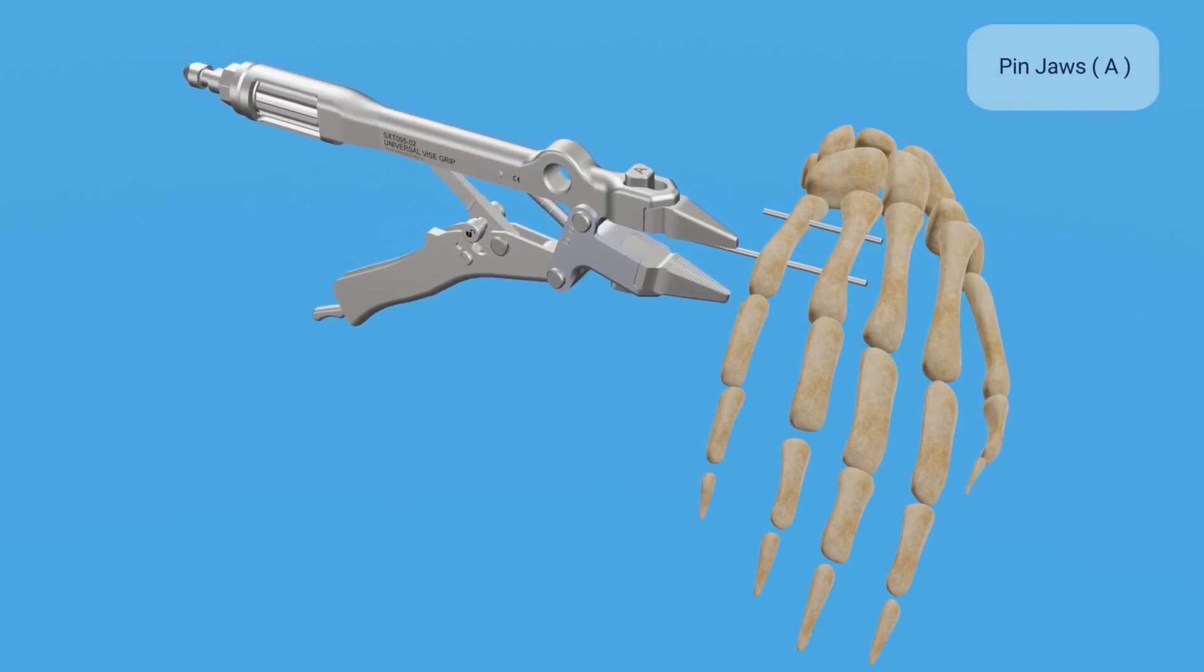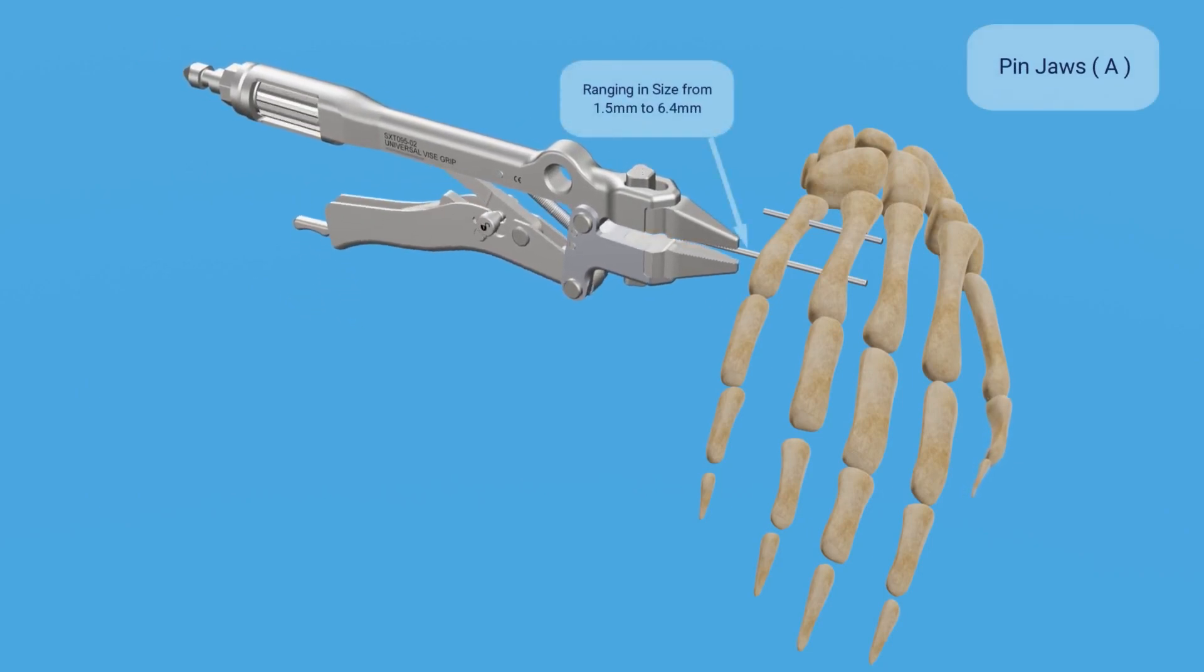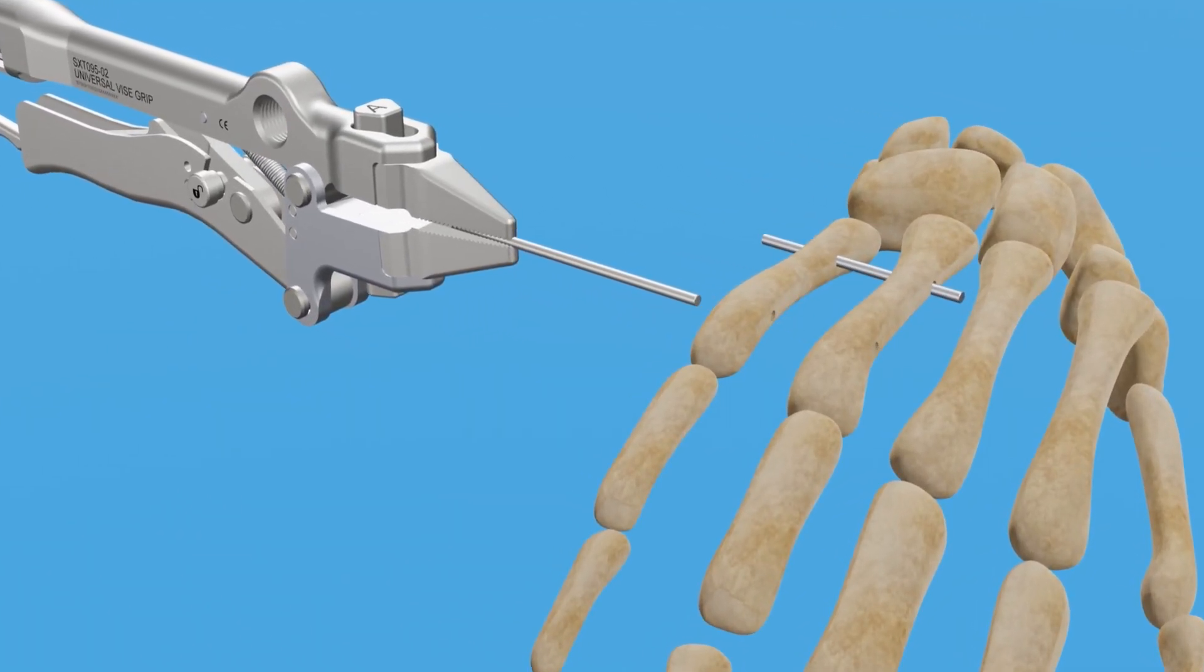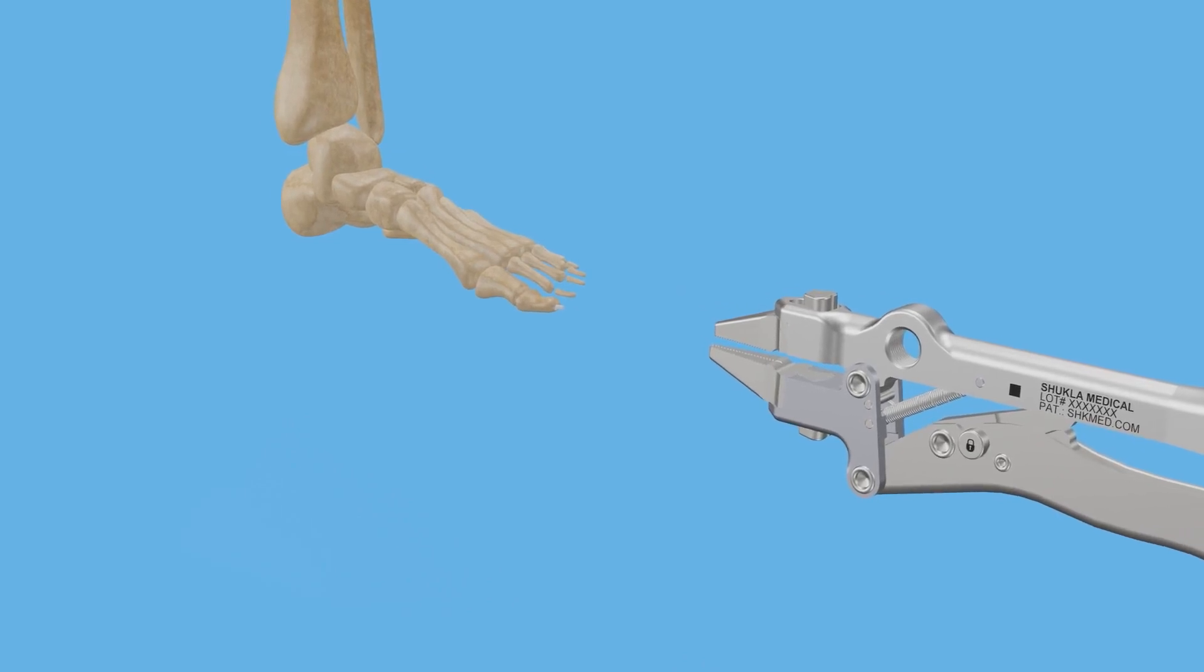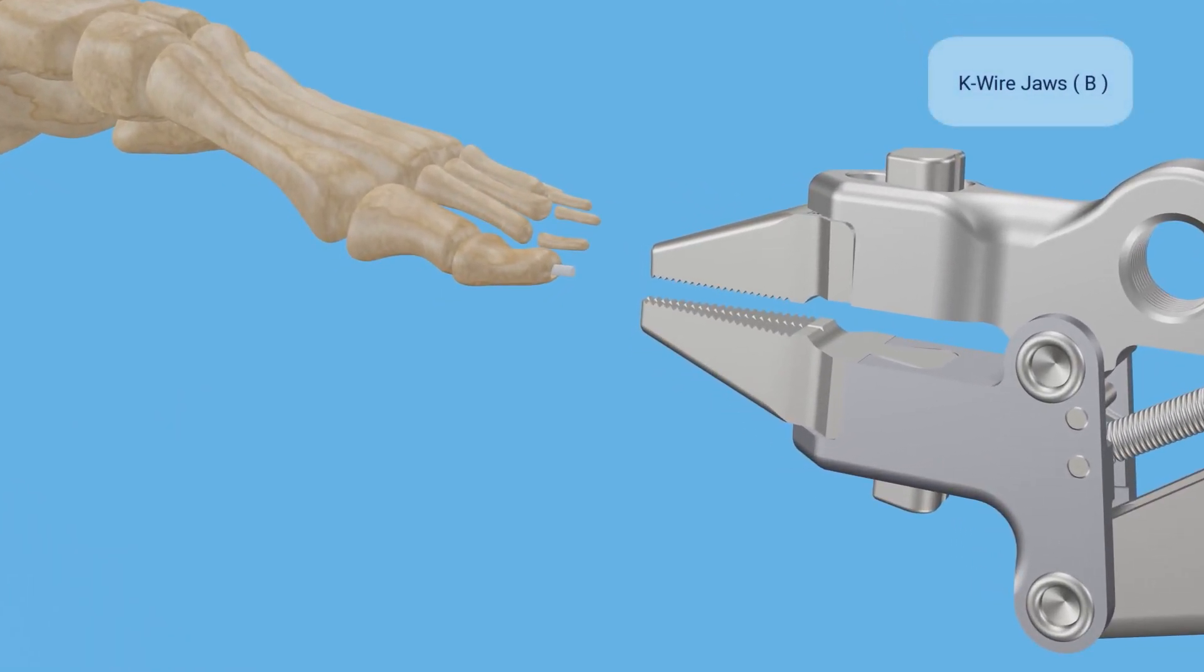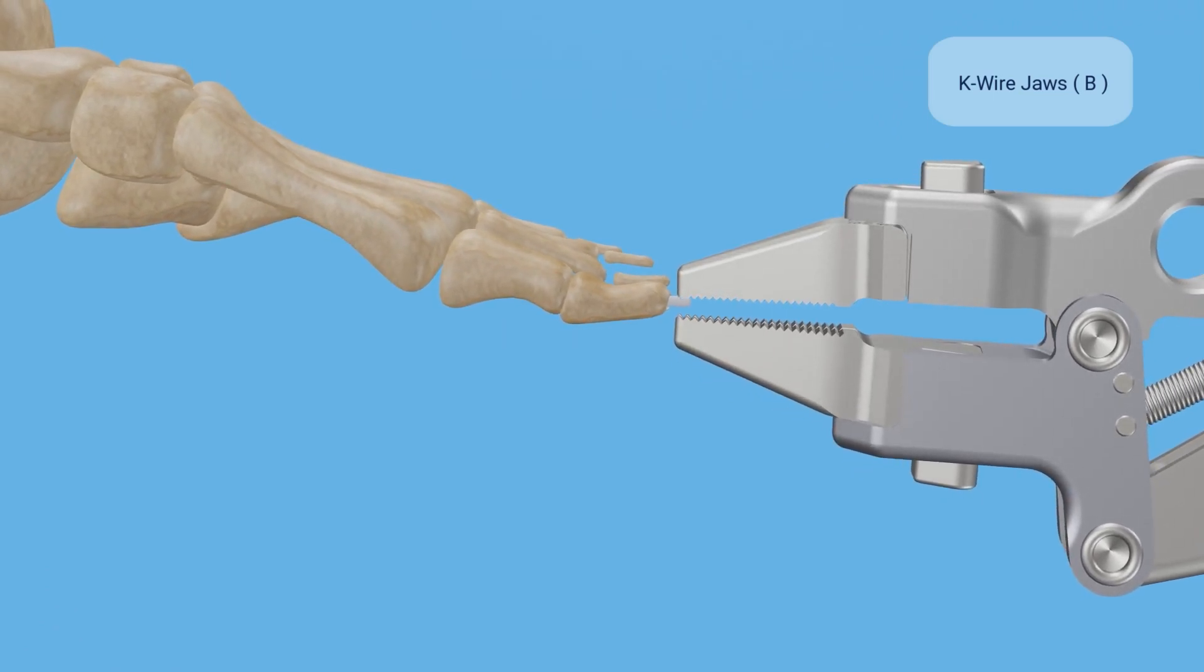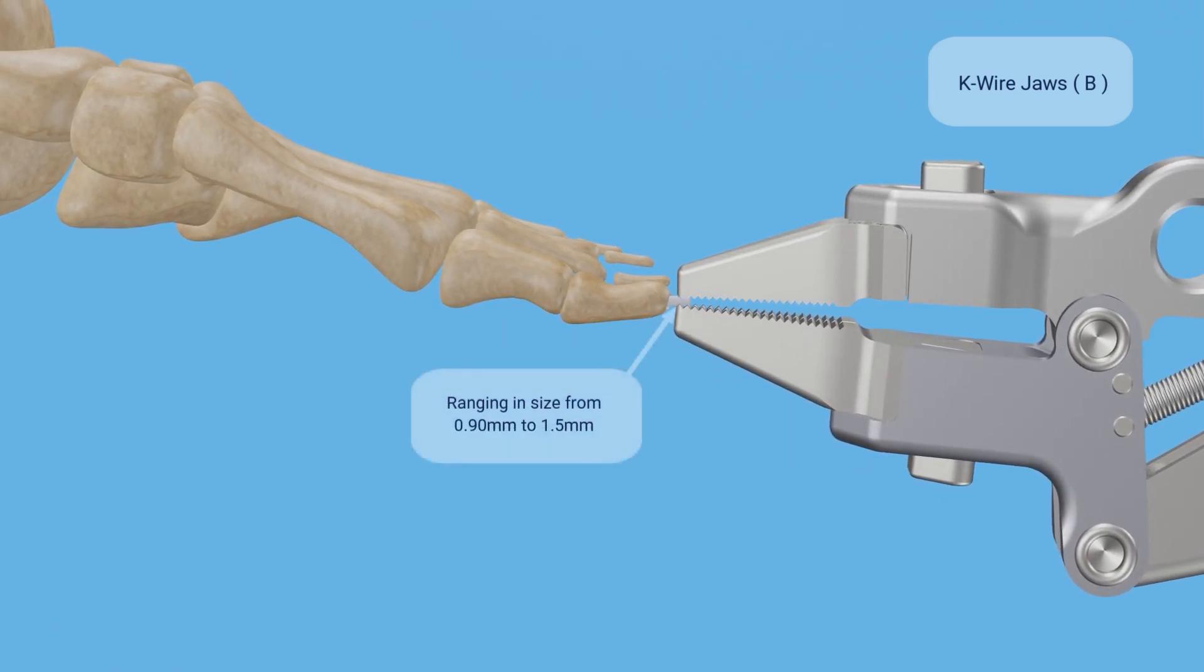The pin jaws can grab pins ranging in sizes from 1.5 mm to 6.4 mm in diameter. The K-wire jaws can grab onto K-wires ranging in sizes from 0.90 mm to 1.5 mm in diameter.